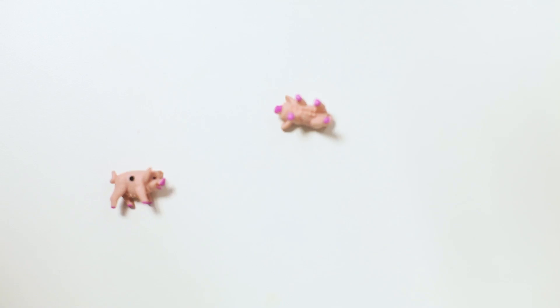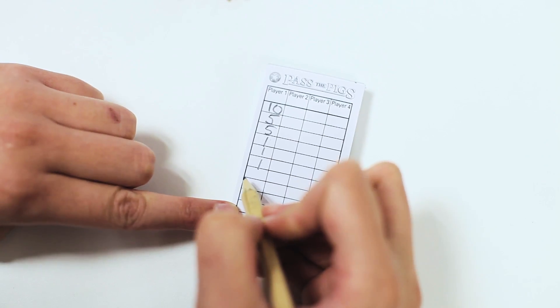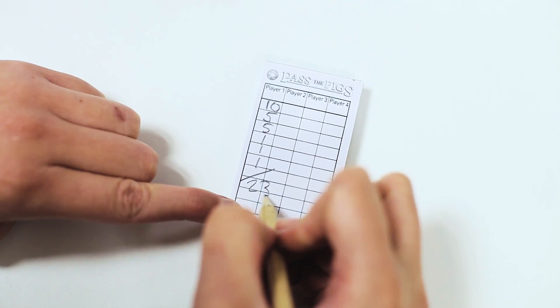The object of the game is to throw the pigs and score as many points in one turn as you can. First player to score 100 points is the winner.